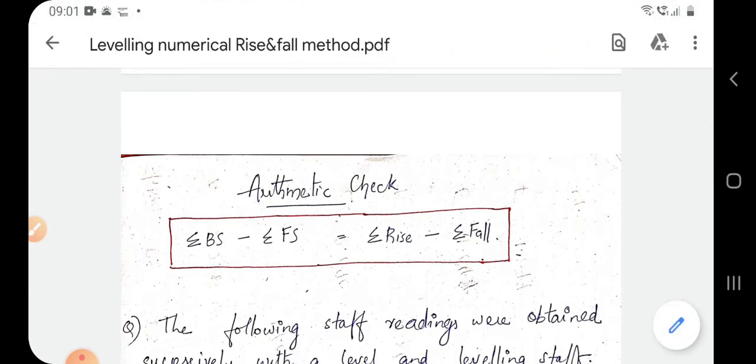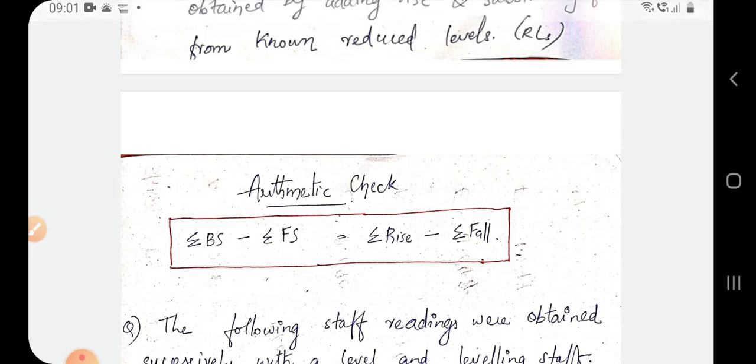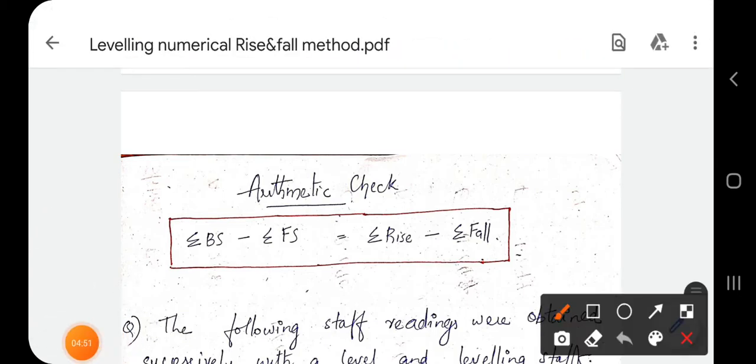Now check: summation of backside minus summation of foresight equal to summation of rise minus summation of fall. It should also be equal to last reduced level.